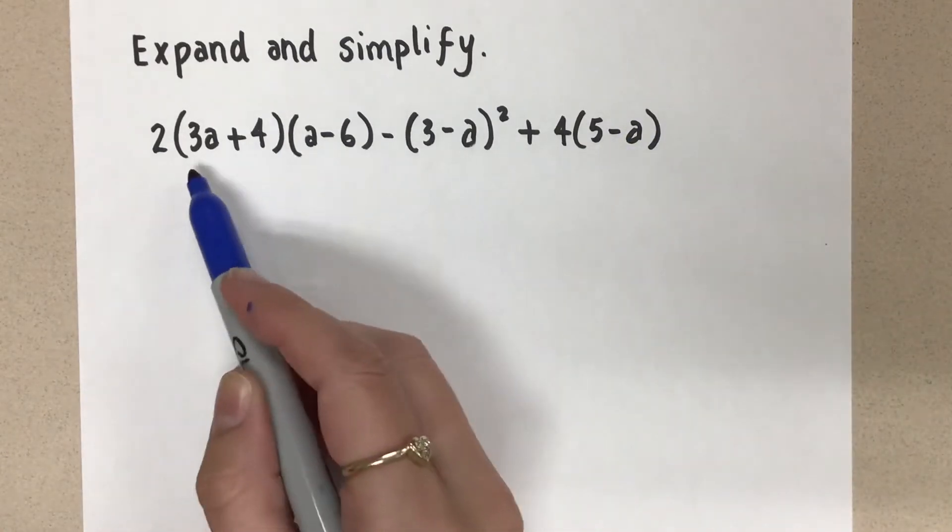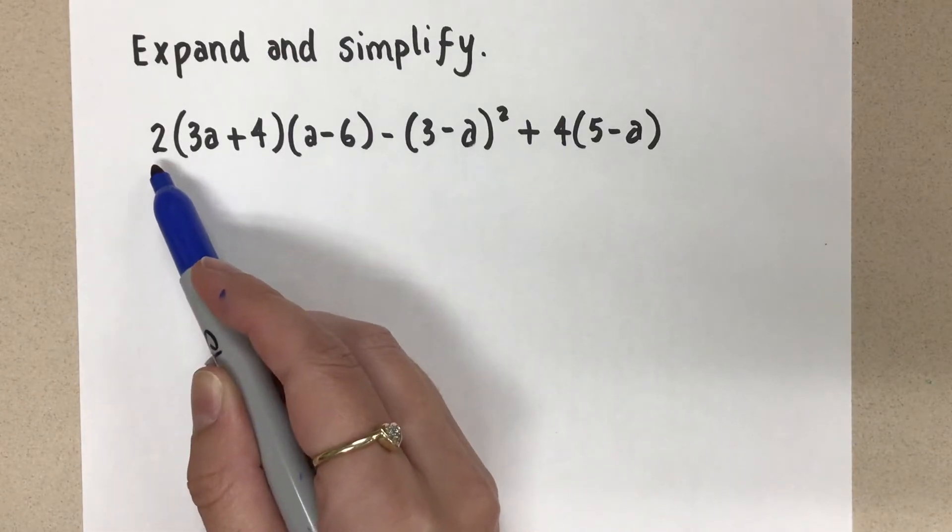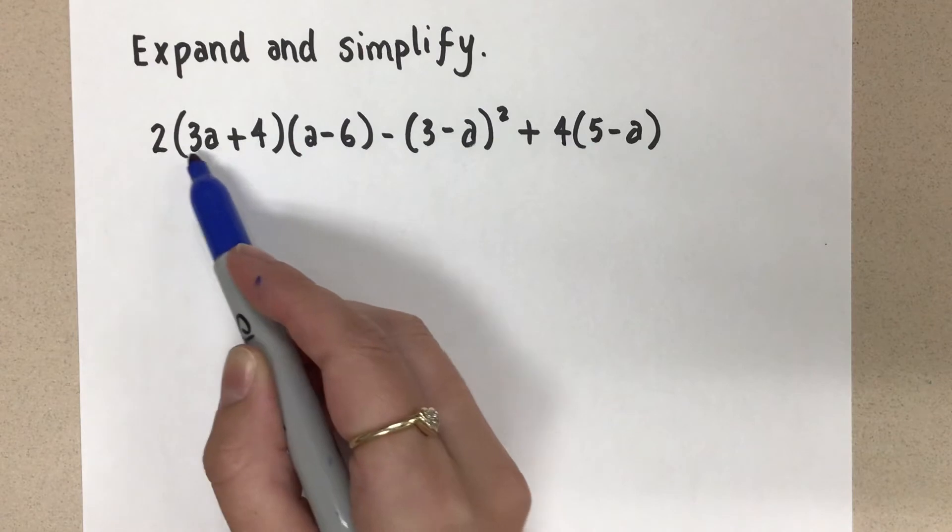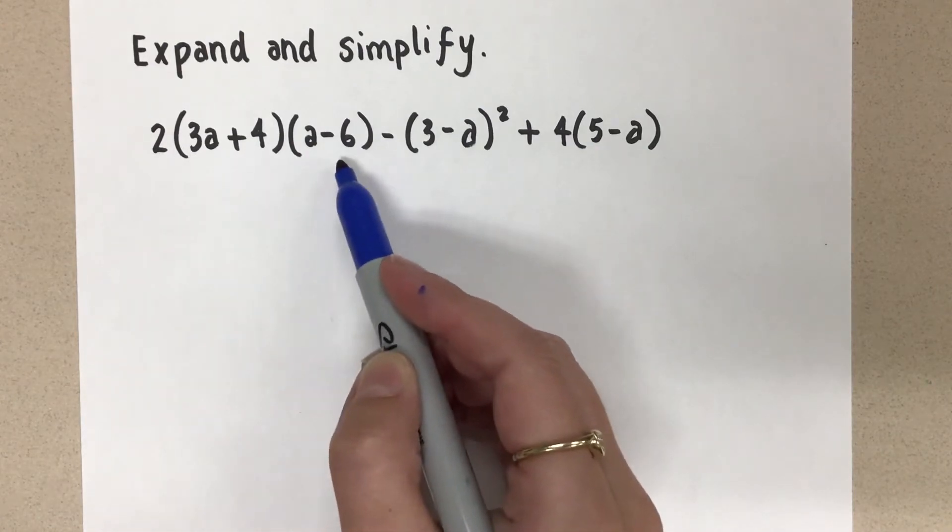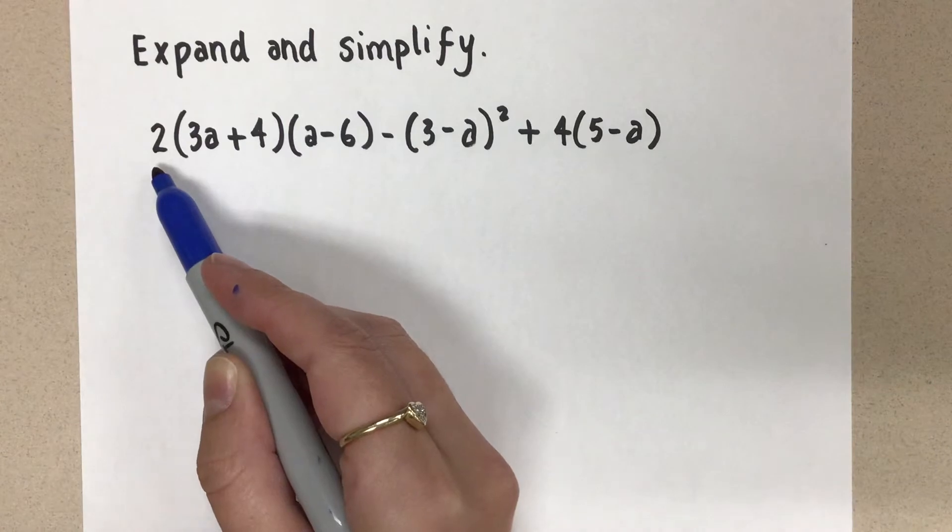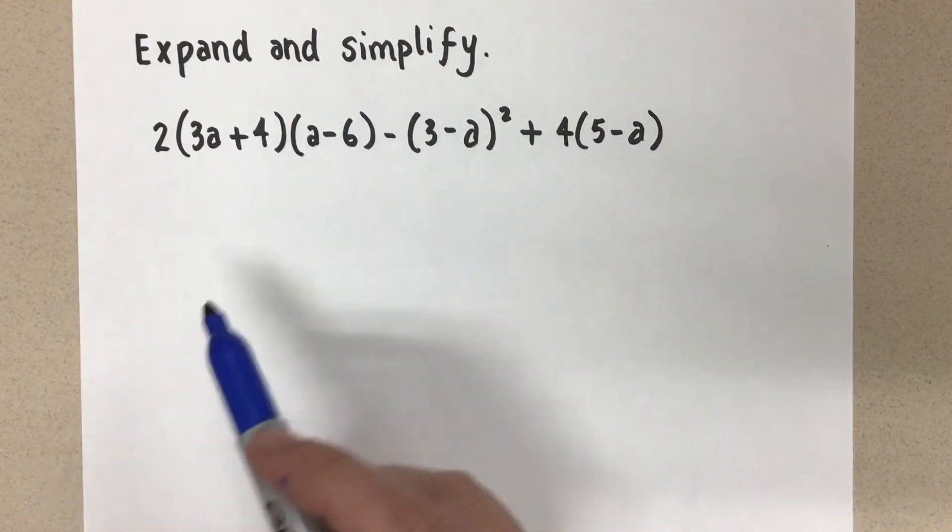And then here we have a four and we can just distribute the four. So when I have a situation where I have a binomial times a binomial and also multiplying with a coefficient, I like to multiply the two binomials together first and then distribute the coefficient after. And I'll do the same thing with the negative here.